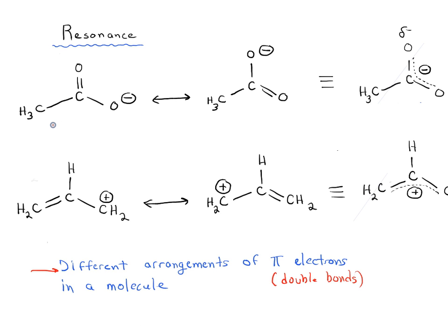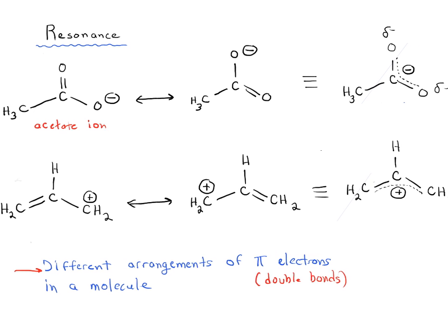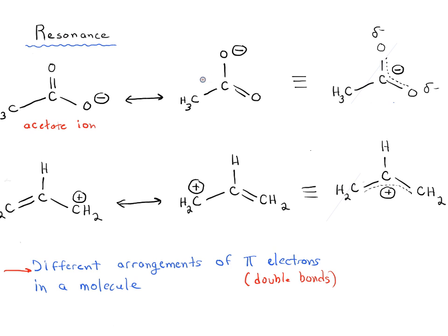Here I've drawn the acetate ion, and there are two different resonance forms available for it. We could draw the oxygen on the bottom right with a negative charge, or we could draw that oxygen as part of a double bond and have the negative charge on the other oxygen. The true picture of the molecule is not that it's interconverting between these two in equilibrium — it's what we call a resonance hybrid.